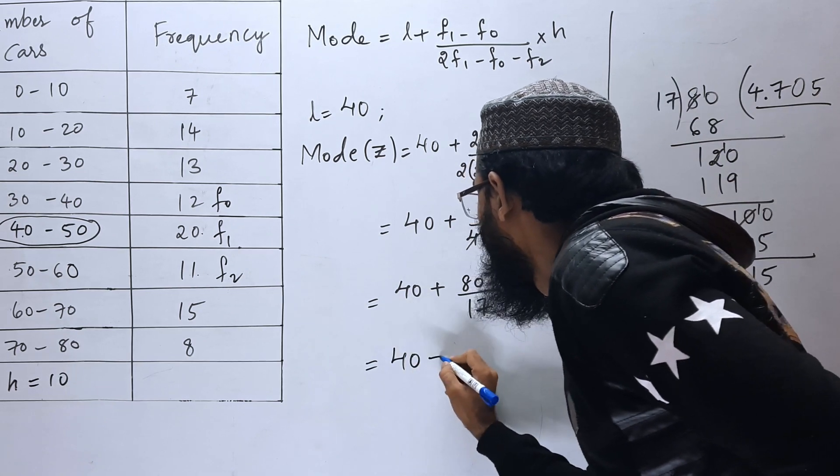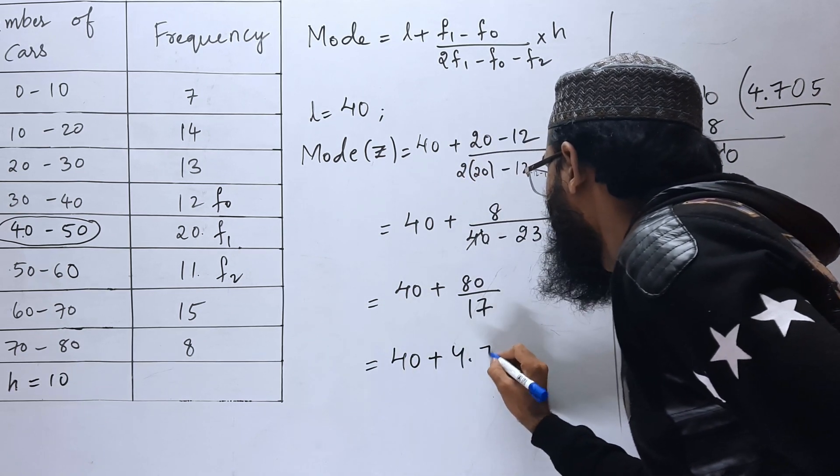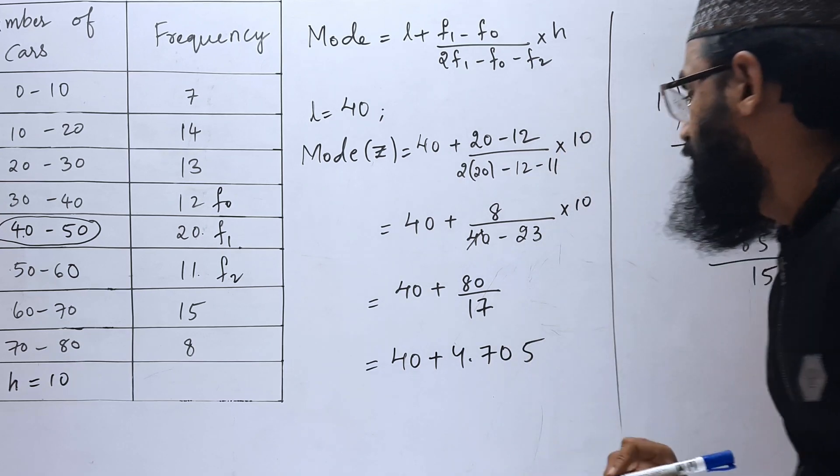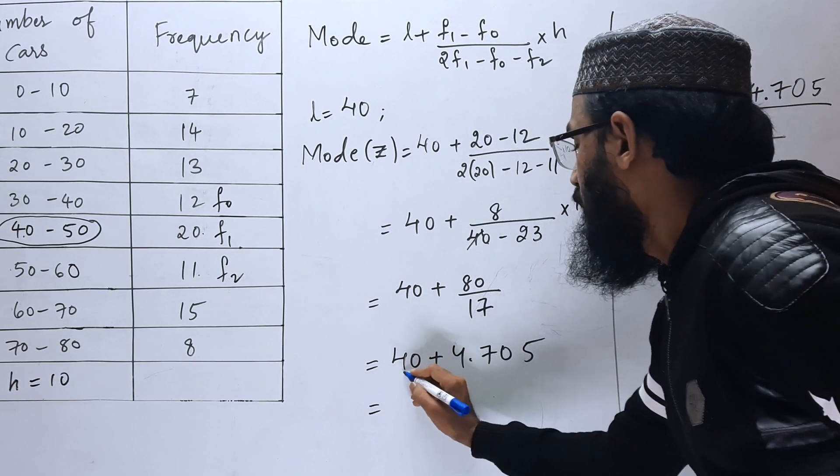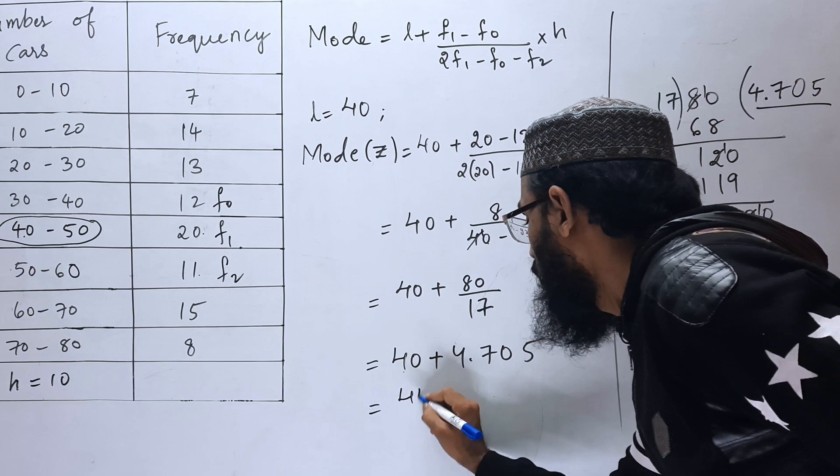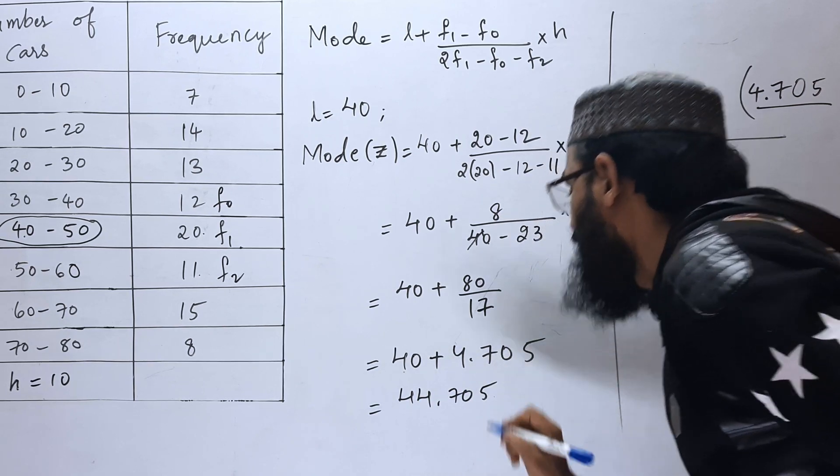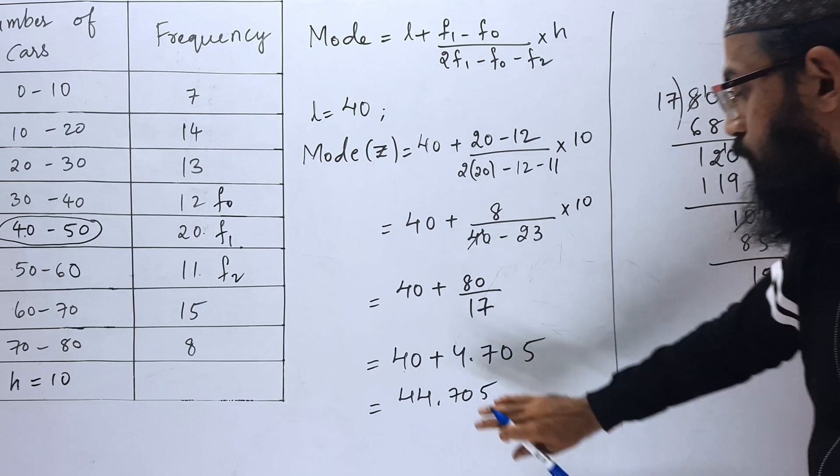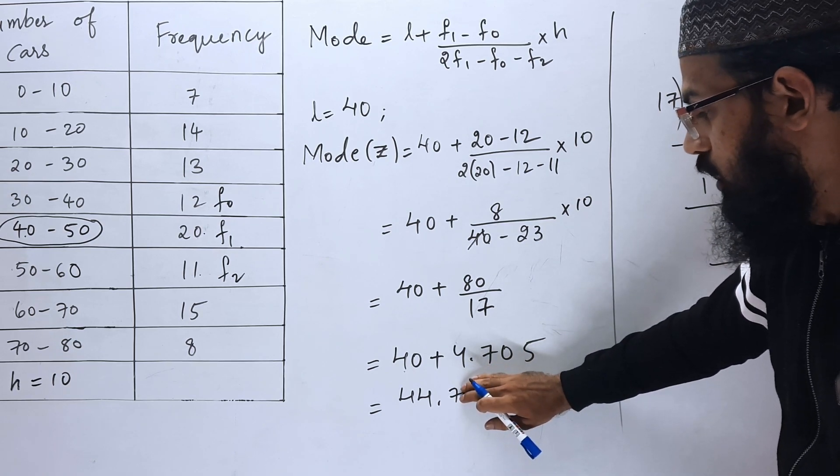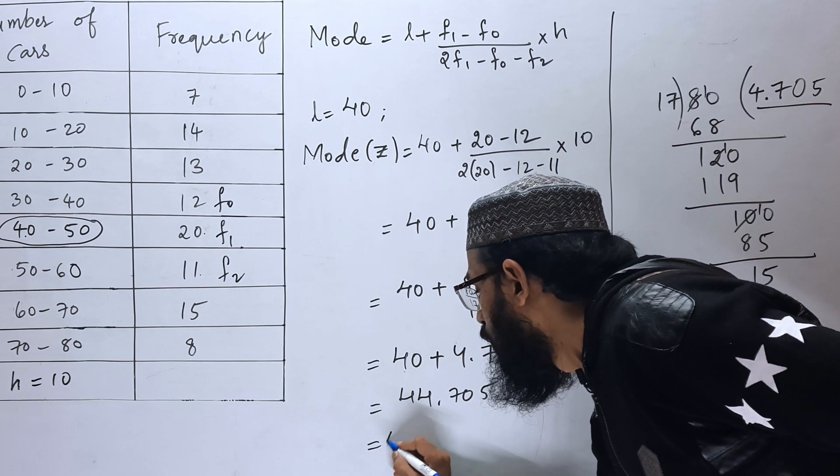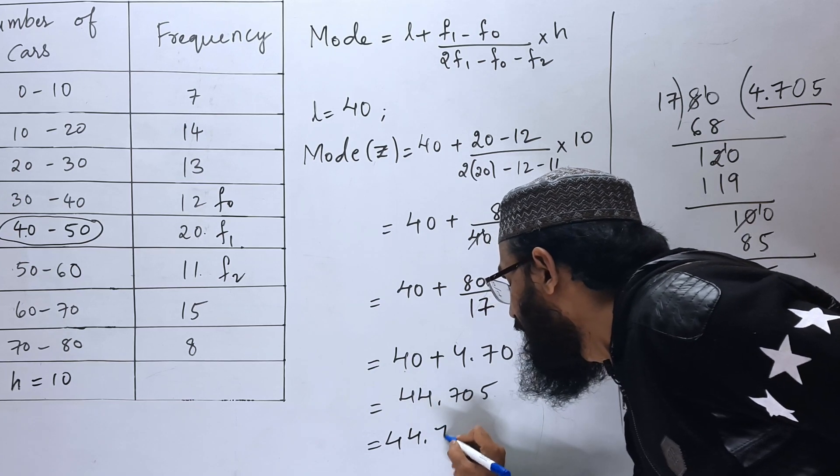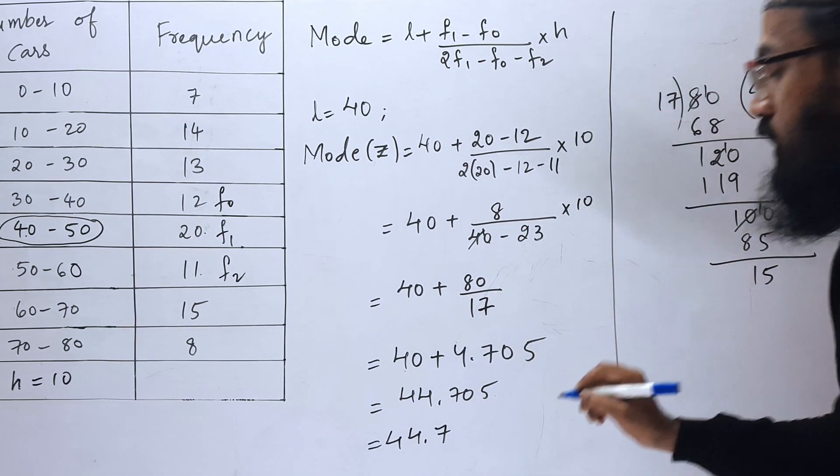So 40 plus 4.705. 40 plus 4 is 44.705. If we round it up to 1 decimal, we will get 44.7.